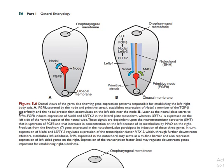A member of the TGF-beta superfamily — the nodal proteins — accumulate on the left side near the node. At this left side, FGF8 accumulates at the level of the nodal cells. This produces a stimulation on the nodal cells on the left side.